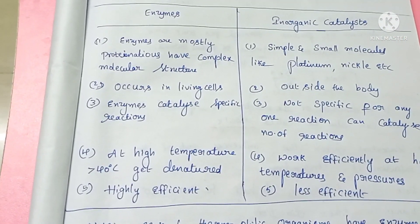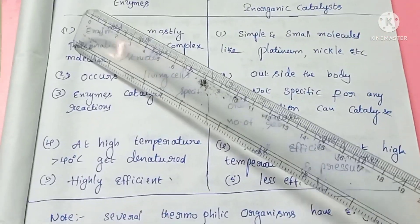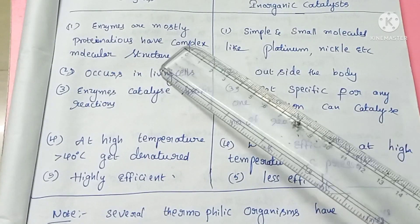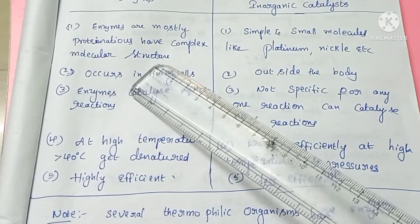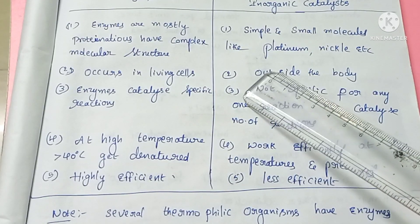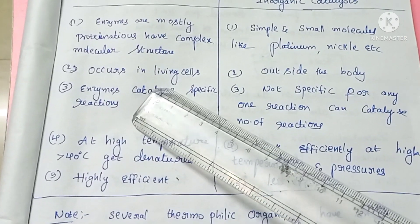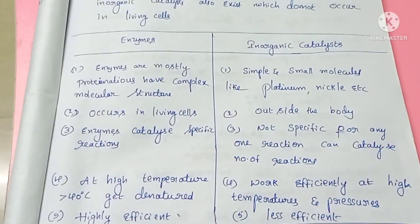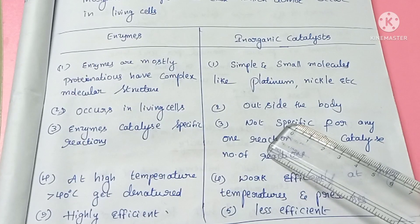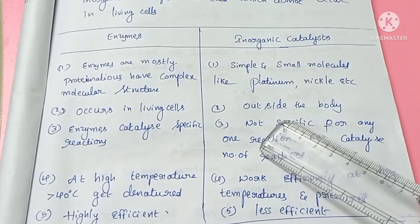Comparing enzymes and inorganic catalysts: Enzymes are mostly proteinaceous in nature and are very complex molecules, whereas inorganic catalysts such as nickel and platinum are very simple and small. Enzymes occur within living cells, while inorganic catalysts are not present in living cells — they work outside the body.